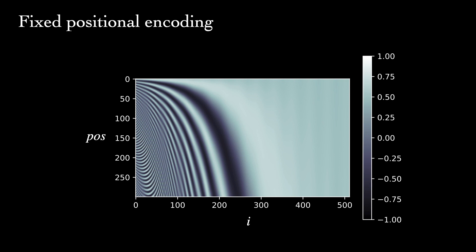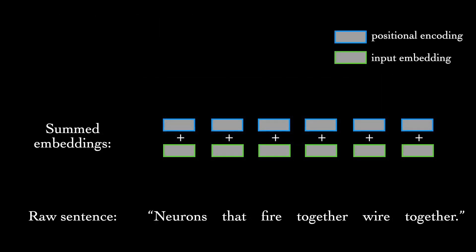The authors make the case that these handcrafted encodings not only represent global position, because each vector is unique, but they're also well-suited to relative positioning. The positional encoding at position t plus k, for some fixed offset k, can be computed as a linear function of the encoding at position t. The authors also argue that these fixed encodings can potentially let the model extrapolate to longer sequences during deployment than those encountered during training. The authors state that the learned and fixed encoding routes led to equivalent performance. The positional encodings have the same dimensionality as the input embeddings, and we sum them together before feeding them to the encoder.